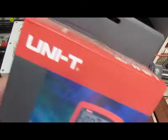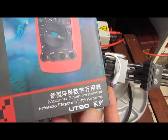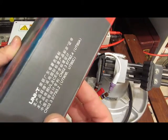This is the next meter I'm going to look at. This is a Unity UT-90. You can see again it's all written in Chinese.